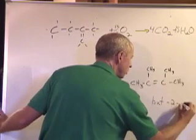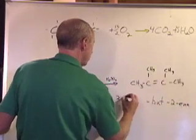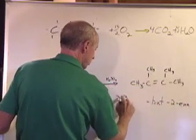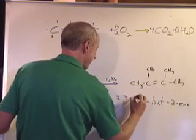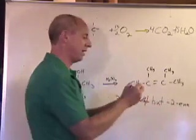we don't have to say buta, just but-2-ene with methyls on the two, three. Two, comma, three, hyphen, dimethyl-2-butene.